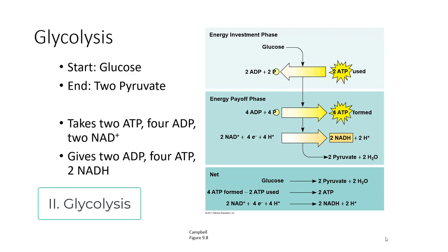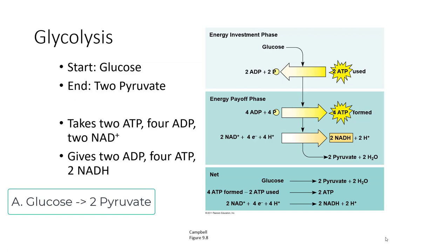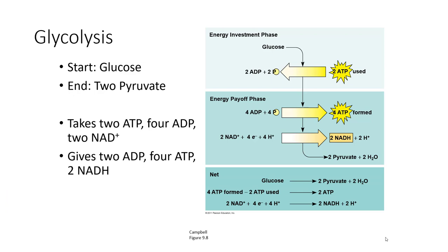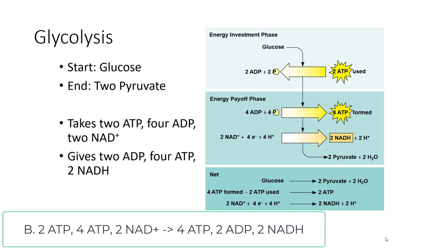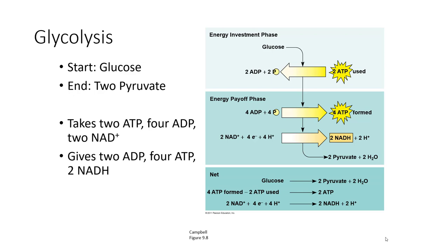Glycolysis is going to break glucose down into 2-pyruvate. We're going to track the carbons and other molecules. Glucose goes in and is converted through several intermediates into 2-pyruvate and 2-water molecules. There is an energy investment phase where you take 2-ATP, and an energy payoff phase where you get 4-ATP. You also get 2-NADH from the energy payoff phase, which requires you to put in 2-NAD+, which are low energy molecules. NAD+ is low energy; NADH is high energy. So your net inputs are 2-ATP and 2-NAD+, and you get out 4-ATP and 2-NADH.